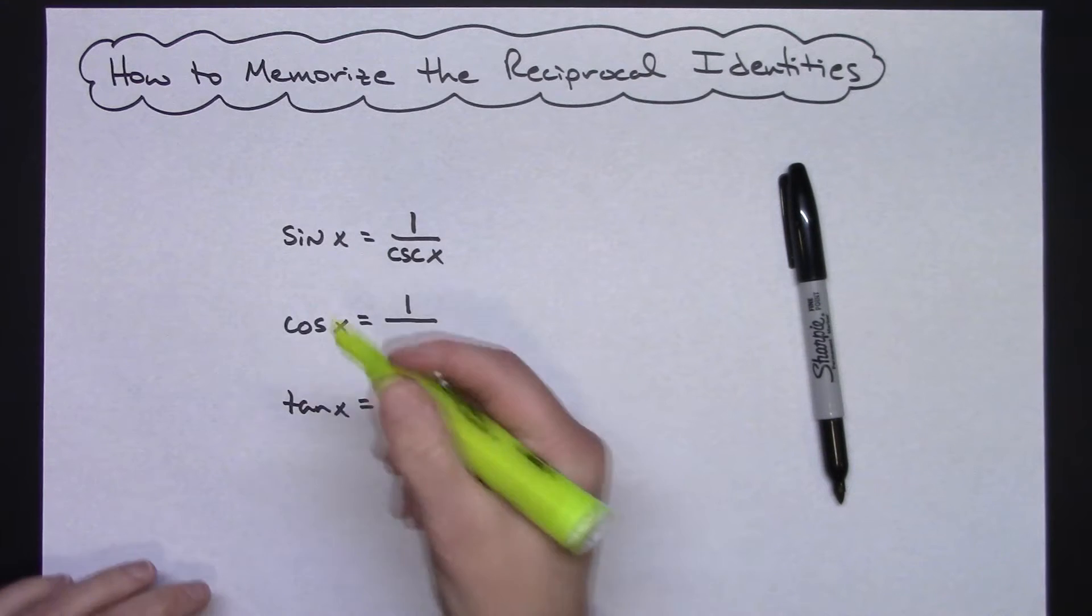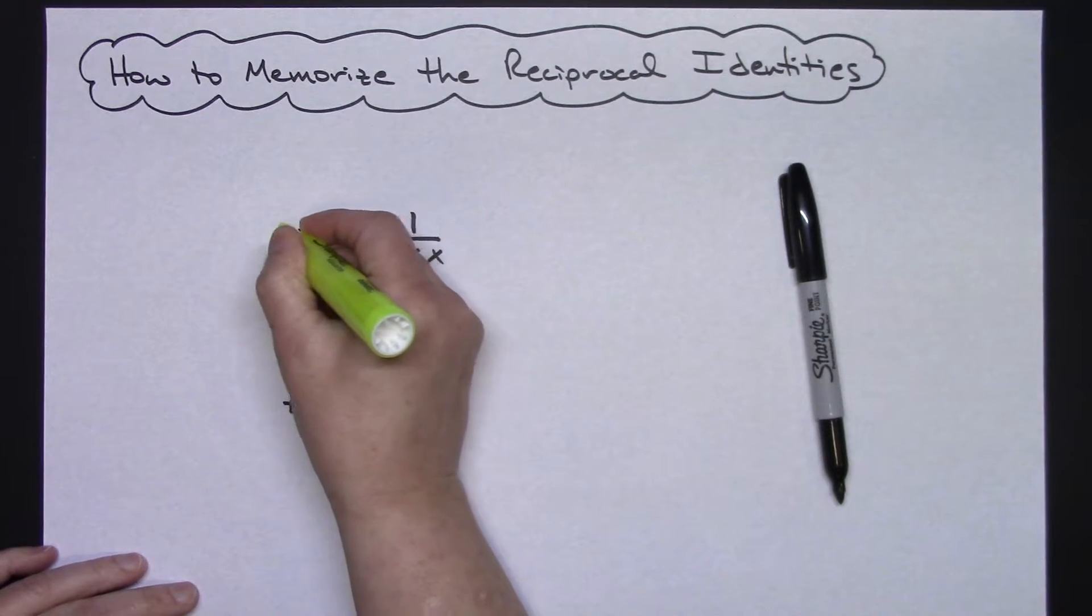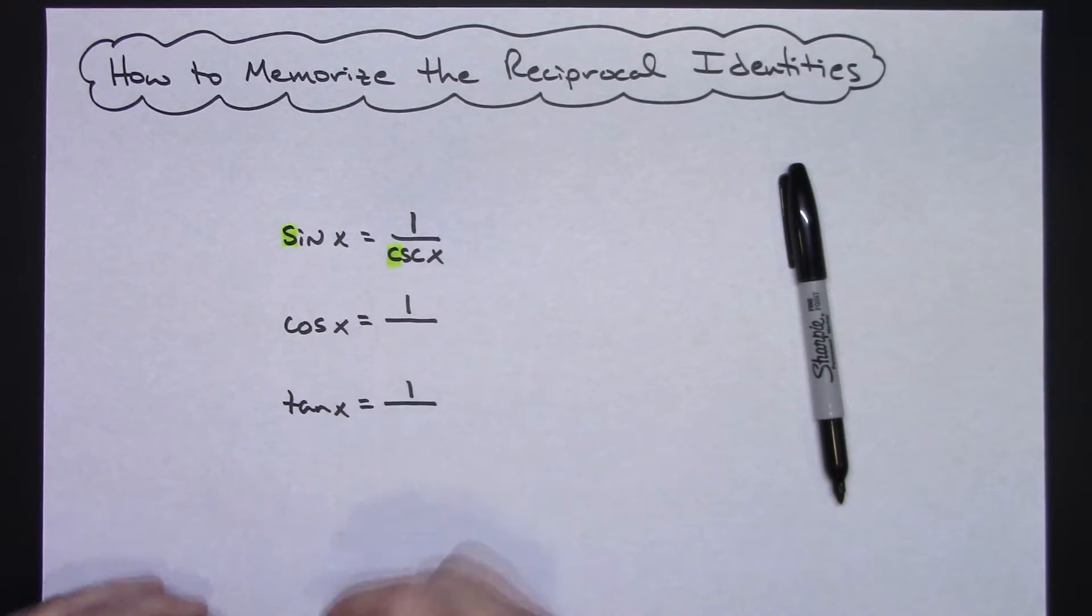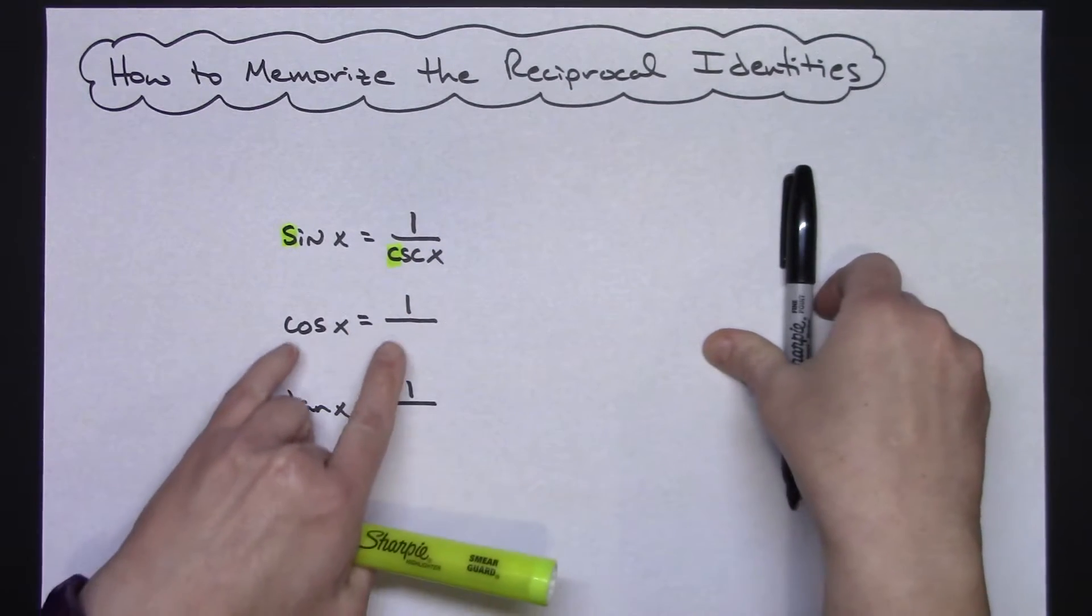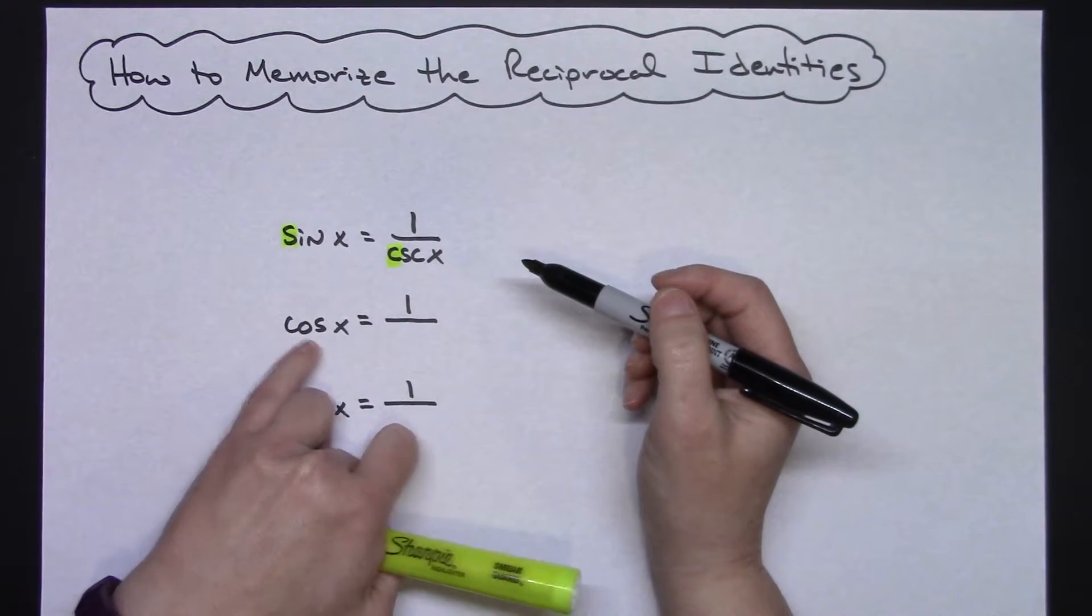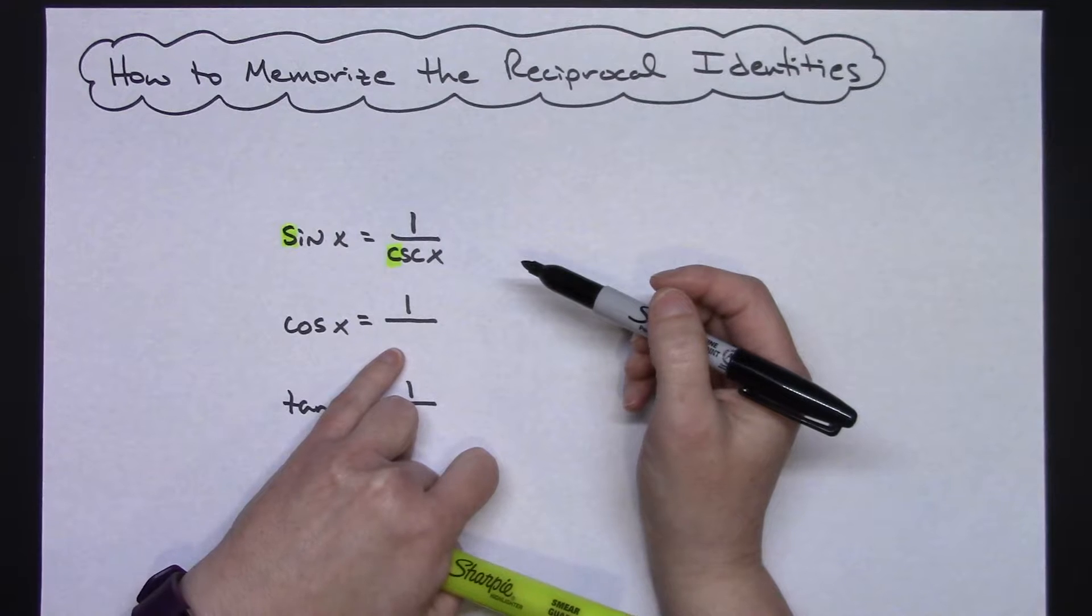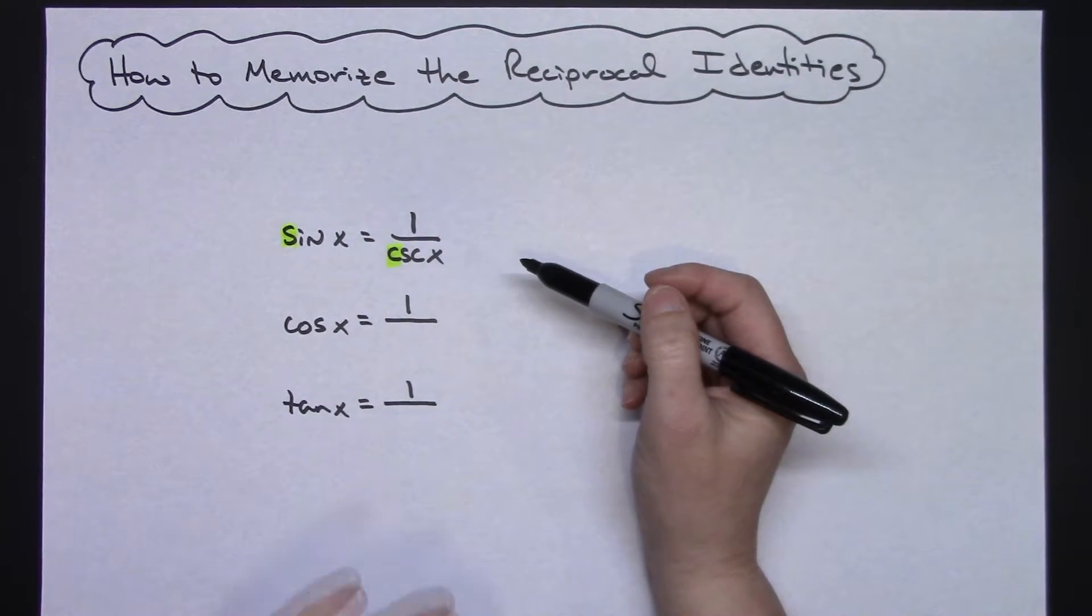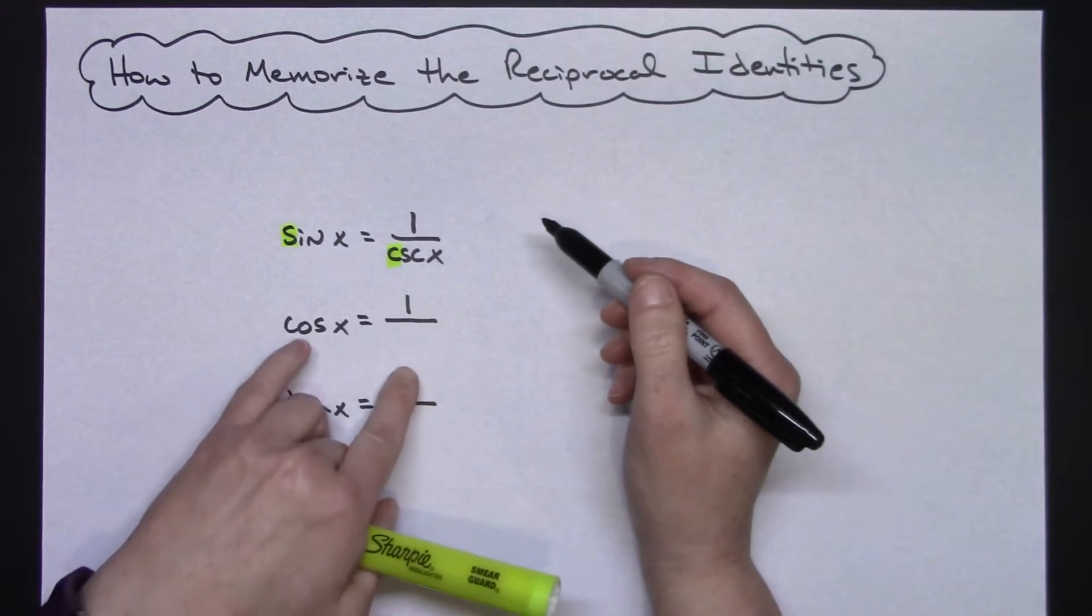So we're looking at the first letter of each of those, that being an S and this being a C, and it's always the opposite. If that's the case for this one as well, I've got cosine here, it's a C, so that means this has to start with an S and it will be my opposite co-function to that one.